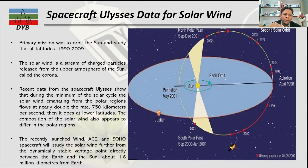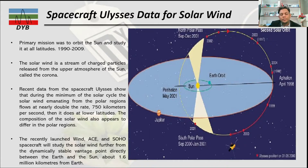The Sun has different latitudes, and the Ulysses mission was designed to study all of them. If you want to know more about latitude and how it revolves, you can refer to my previous lecture. This spacecraft mission ran from 1990 to 2009, and the purpose of Ulysses was to understand more about the solar winds and the Sun's atmosphere.